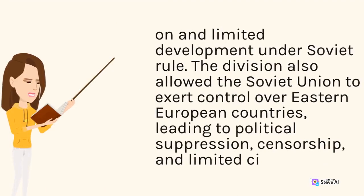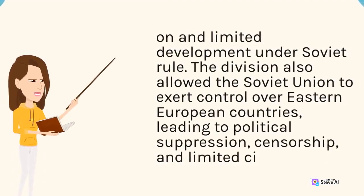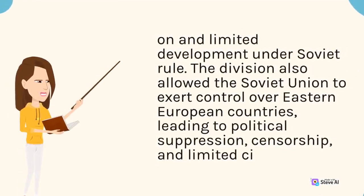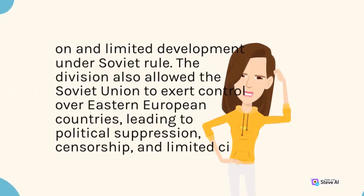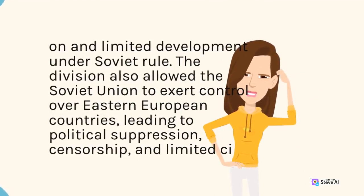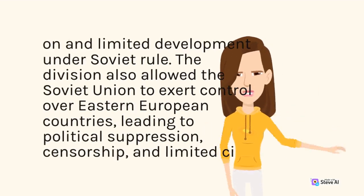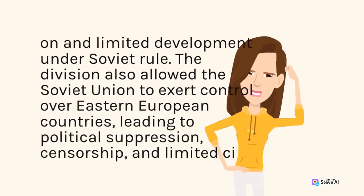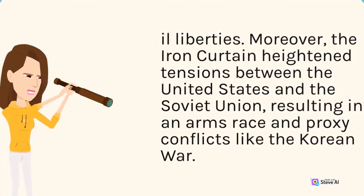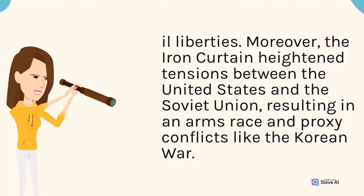The division also allowed the Soviet Union to exert control over Eastern European countries, leading to political suppression, censorship, and limited civil liberties. Moreover, the Iron Curtain heightened tensions between the United States and the Soviet Union, resulting in an arms race and proxy conflicts like the Korean War.